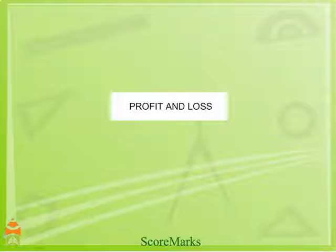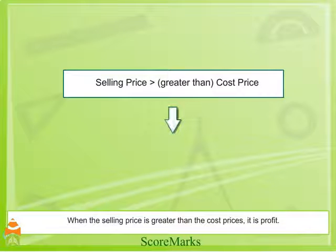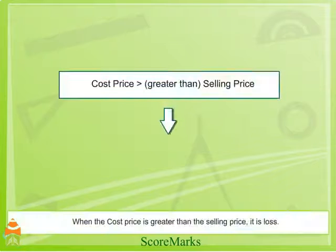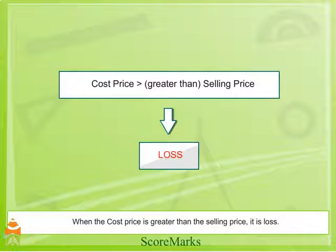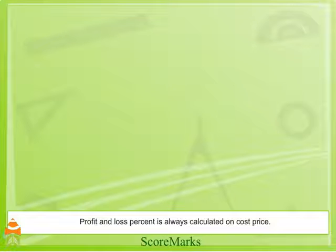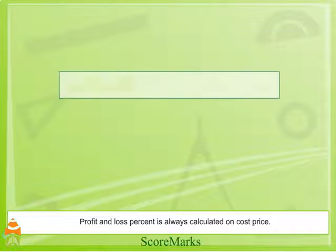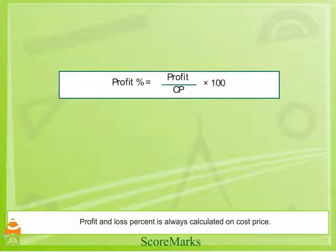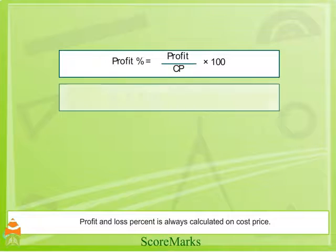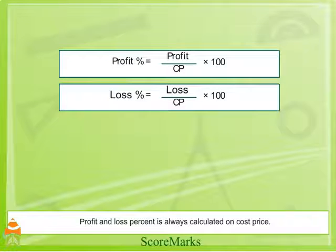Profit and Loss. We have learnt about the basics of profit and loss in the earlier classes. When the selling price is greater than the cost price, it is profit, and when the cost price is greater than the selling price, it is a loss. Profit and loss percent is always calculated on cost price. Profit percent is equal to profit upon cost price multiplied by 100. Loss percent is equal to loss upon cost price multiplied by 100.